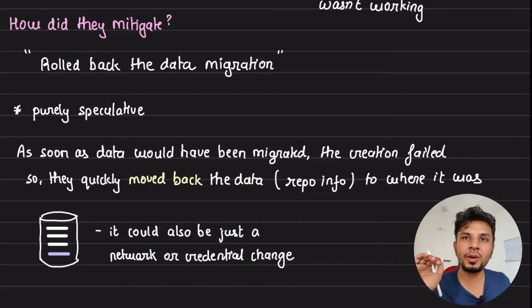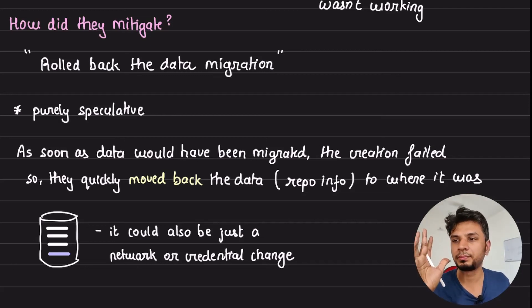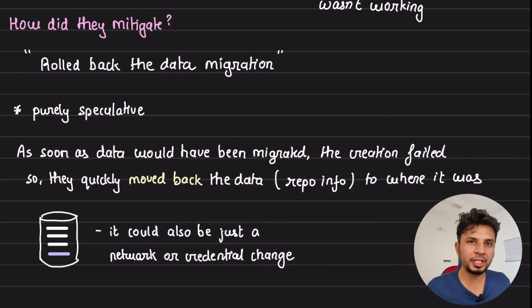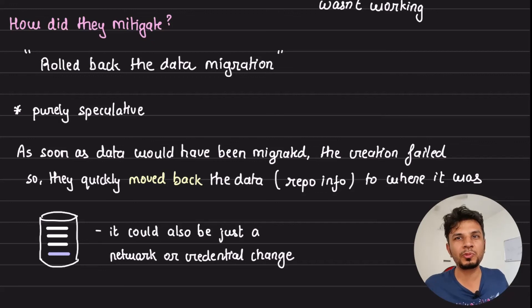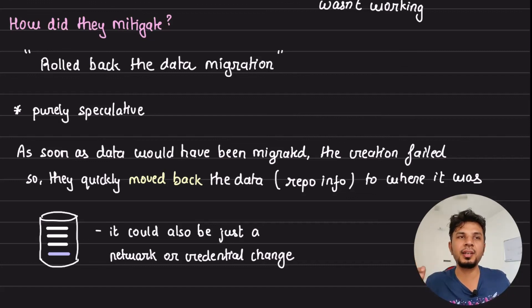Whenever an outage happens, the first intuition of an organization is to see if it can be rolled back. If it is easy to roll back, every organization would prefer doing a rollback immediately, because it's the most trustworthy solution. Otherwise they'd try to push a fix — maybe a network change, a configuration change. The context of the outage matters. Think of rollback first and then fix later: if it's rollback-worthy, do that rollback immediately; otherwise push a fix.